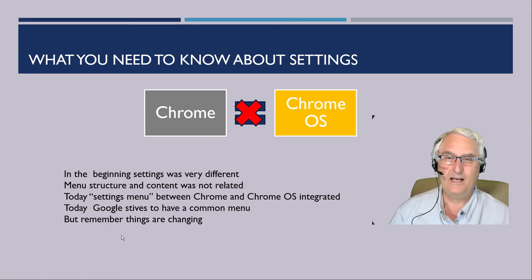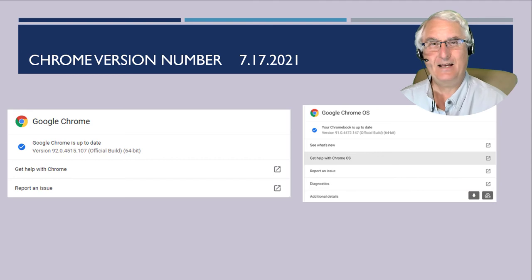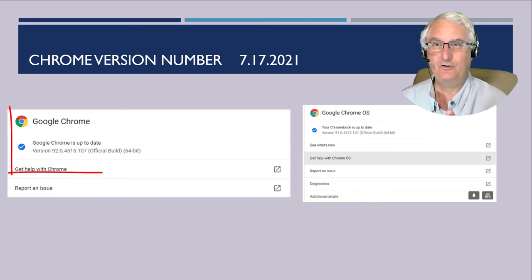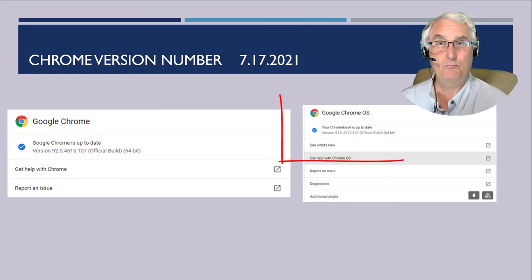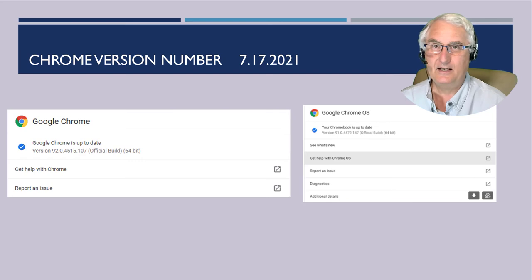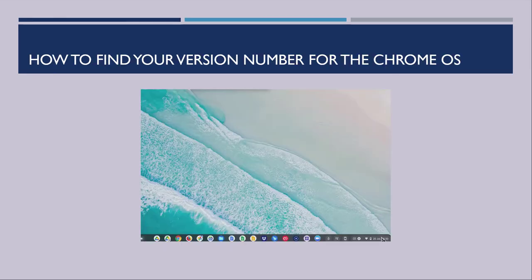Your Chrome browser on your Chromebook is integrated into the Chrome OS, and today Google strives to make everything a common menu that looks the same. On July 17, 2021, the version numbers were as follows: on my PC, my Google Chrome browser version was 92.0. On my Chromebook, a Pixel Chromebook, the Chrome OS was version 91.0. This would also be the version of the Chrome browser on the Chromebook since the two are integrated — so they are different between different devices.